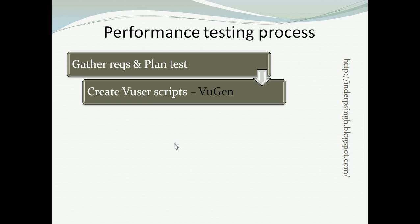The second step in the performance testing process is to create the VUser scripts, and this is done in VU Gen. We record or create the automated performance testing script in VU Gen. Also, we create sufficient and realistic test data to be used in the performance test.